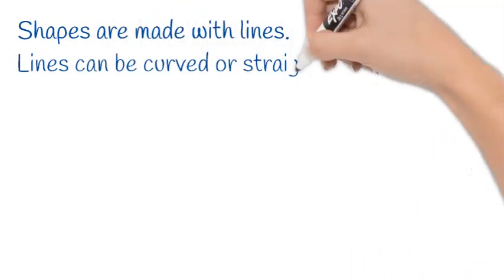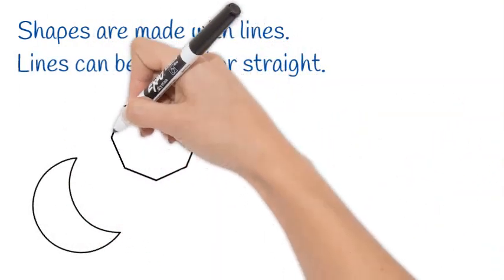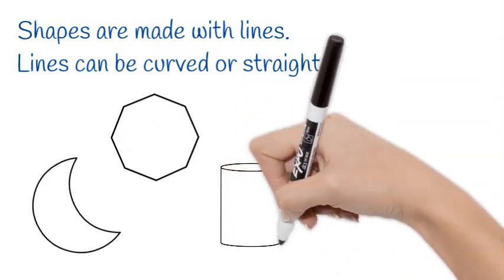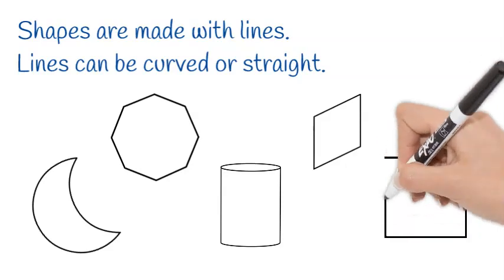Shapes are made with lines. Lines can be curved or straight. Crescent, octagon, cylinder, rhombus, square, oval.